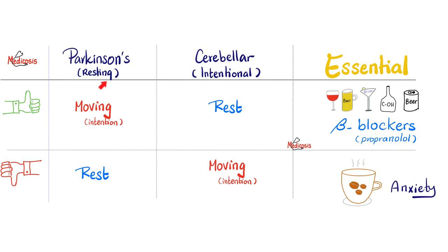There is resting tremor, such as Parkinson's. There is intention tremor, like cerebellar tremors. And we have essential tremors — no one knows why, whether it's coming from the basal ganglia or the cerebellum.